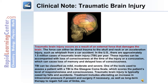Traumatic brain injury is typically caused by falls and accidents. Treatment includes alleviating an increase in intracranial pressure if present, surgery if necessary, and long-term therapy to regain full use of limbs and speech if required.